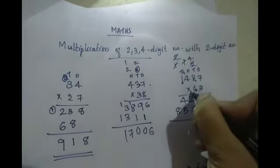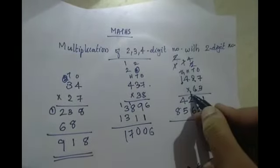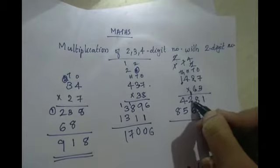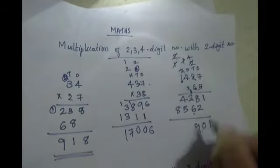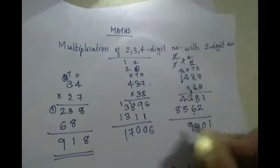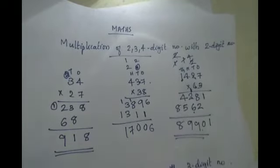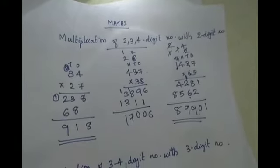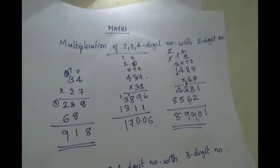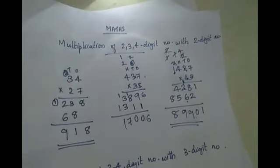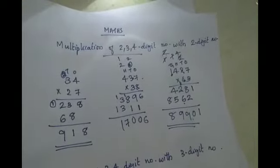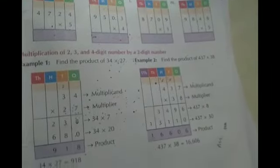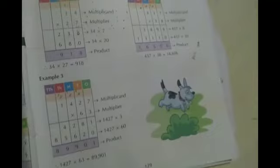Now we will add it. 1, 0, carry 1. 8 plus 2 is 10, write 0, carry 1. 1 plus 2 is 3. 3 plus 6 is 9. 5 plus 4 is 9, and 8. So your answer is 89,901. So we will check if the answer is correct. So 89,901, right? So the answer is correct.